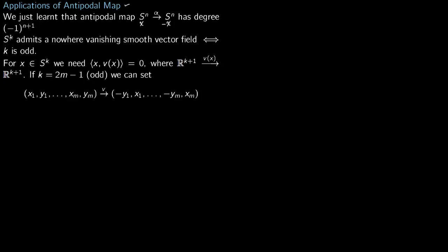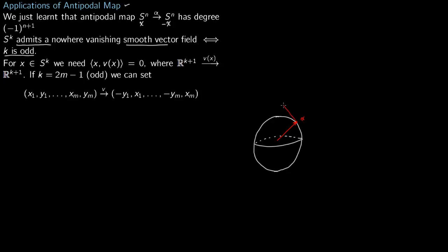The first application is that S^k admits a nowhere vanishing smooth vector field if and only if k is odd. To illustrate, consider a sphere with a point x on it. You have a vector V of x perpendicular to x, meaning the dot product x dot V of x equals zero.